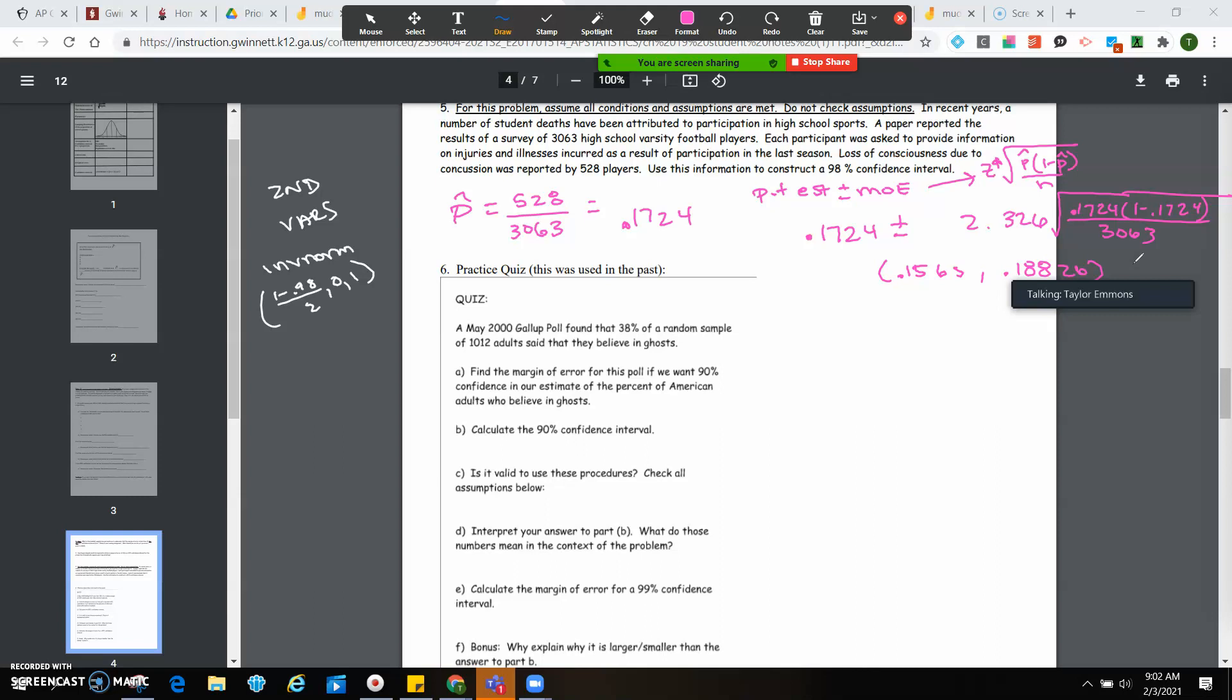All right, so on the practice quiz, it says, A May 2000 Gallup poll found that 38% of a random sample of 1,012 adults say that they believe in ghosts. Ghosts are real. It's fine. So find the margin of error for this poll if we want a 90% confidence in our estimate of the percent of American adults who believe in ghosts. So, first thing that we need to do is identify our P hat. P hat. I always think of P's having a party because he's got a little hat on top. So you're taking 38%. We're going to turn it to 0.38. Boom! Found the P hat. That was easy.